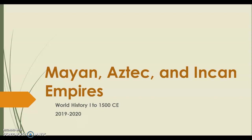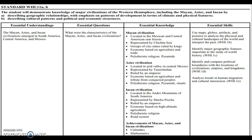We've been on the eastern hemisphere all year, but now we're going to come over to North, Central, and South America. Today we're looking at SOL strands 11A and B, describing geographic relationships with emphasis on patterns of development in terms of climate and physical features, and describing cultural patterns and political economic structures for all three civilizations.